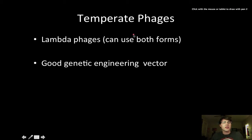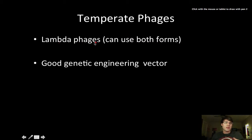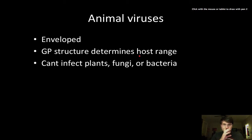There are also temperate phages — these are ones that can be lytic or lysogenic, varying depending on circumstances. An example of this would be lambda phage, which we use as a very good genetic engineering vector for delivering genes of interest to bacteria.